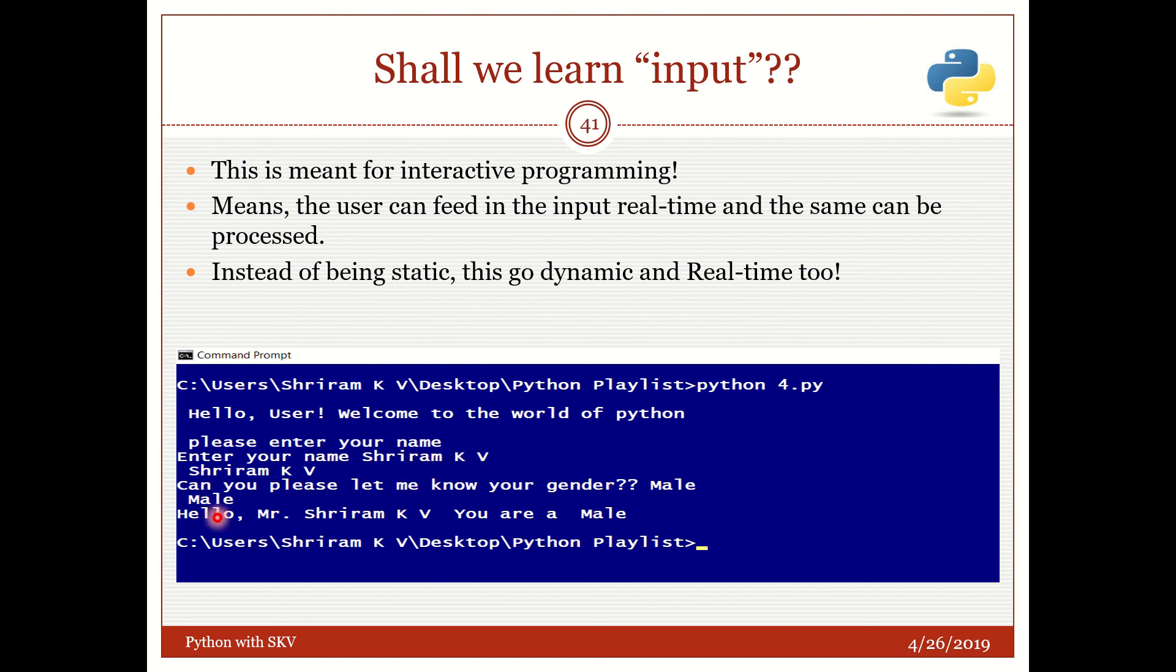This is the variable name. Gender_user, this is the variable name. In between you can use whatever you want within double quotes. That will be printed without processing it, just like that it will be printed and that's all. We'll get an output here. 'Hello user, welcome to the world of Python', that's what was there. 'Please enter your name', enter your name 'Sriram KB'. 'Can you please let me know your gender', 'Male', male is reflected. 'Hello Mr. Sriram KB, you are a male'. That's it.